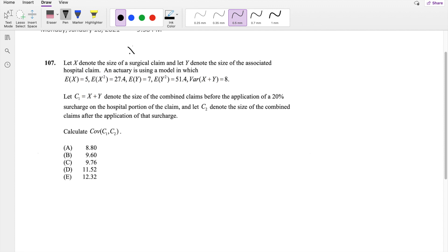So X denotes the surgical claims, and Y denotes the associated hospital claims. And they say that C1 is equal to X plus Y, but then we also know C2 is equal to upcharge on the hospital portion of the claim.